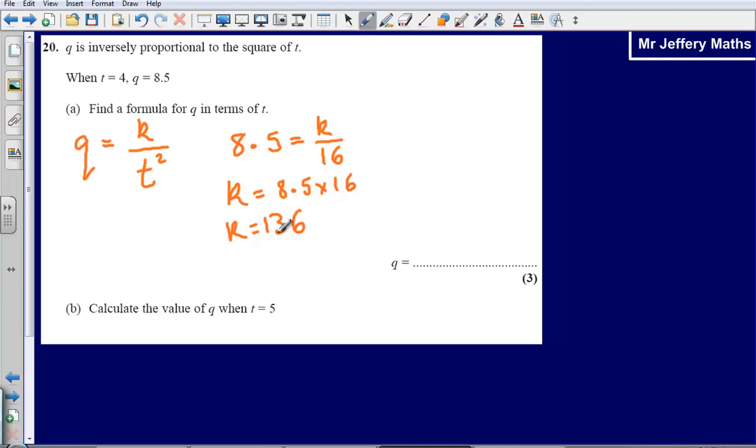So what I could say then is that my formula for q is going to be q equals 136 divided by t squared.